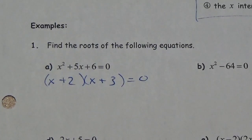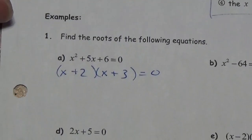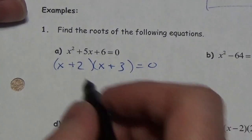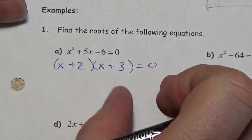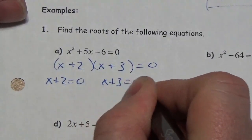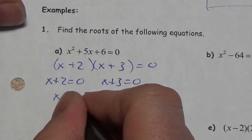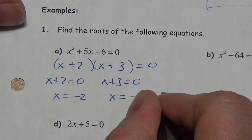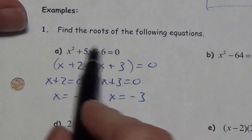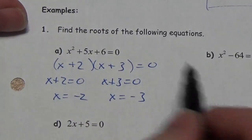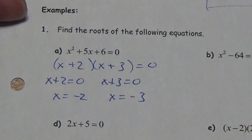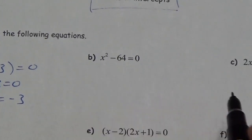Guess and check is often the fastest method for factoring. Ultimately you're asking: what two numbers multiply to get this value or add to get this other value? Once we have two factors whose product equals zero, one of those factors must equal zero. That gives x = -2 or x = -3 as our two solutions. Those are also the x-intercepts or zeros of the function. Next: x² - 64 = 0.